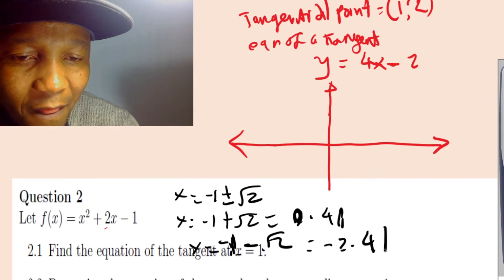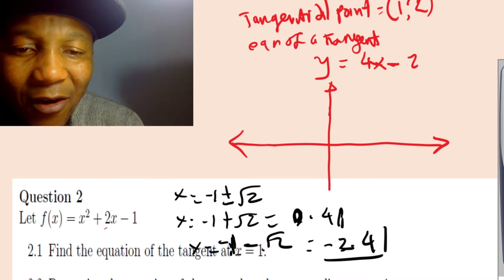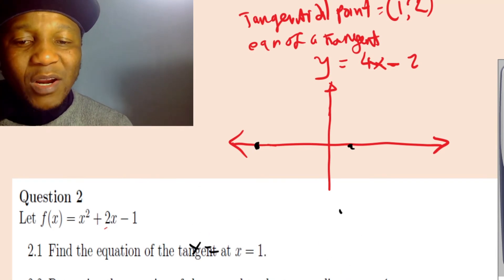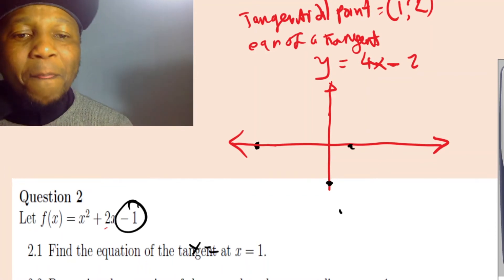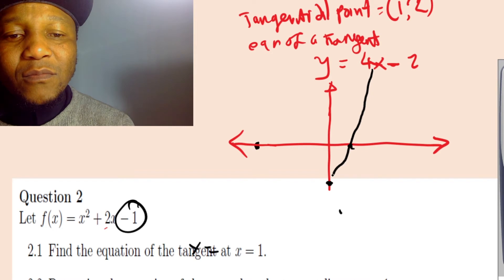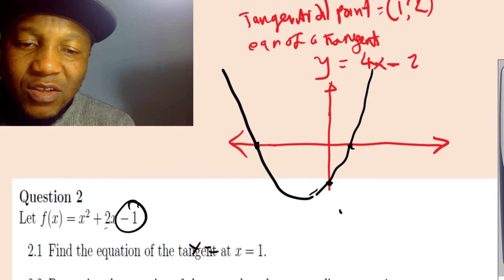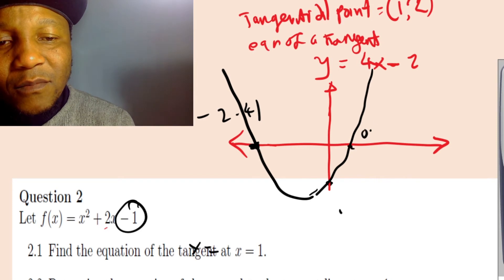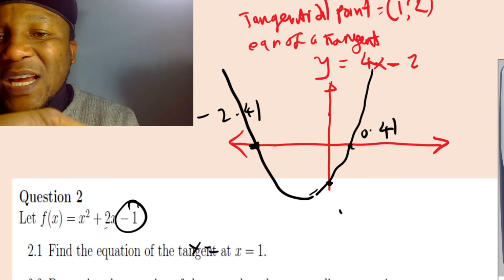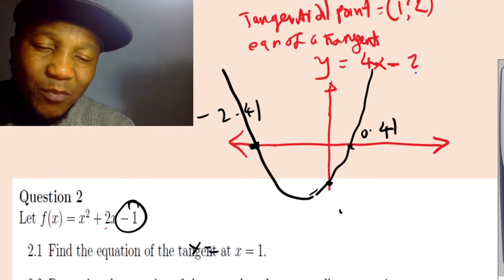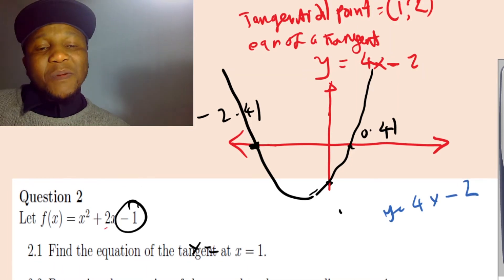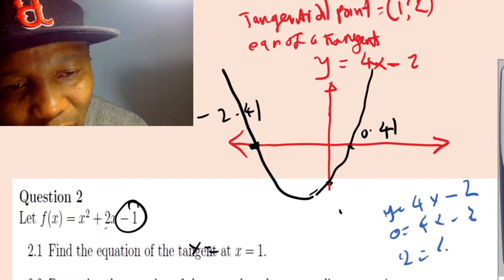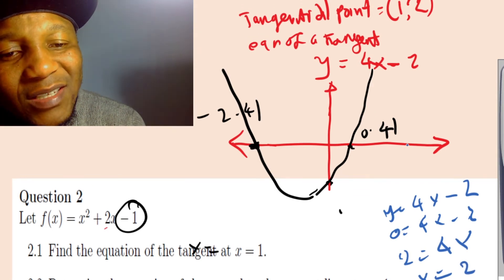So the x-intercepts are at approximately -2.41 and 0.41, and the y-intercept is at -1. Now let's also find the intercepts of the tangent line y = 4x - 2. When x = 0: y = -2 (y-intercept). When y = 0: 0 = 4x - 2, so x = 0.5 (x-intercept).